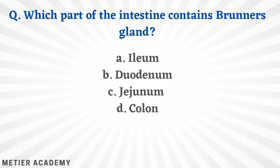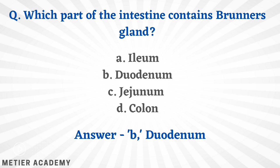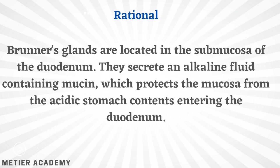Next question: which part of the intestine contains Brunner's glands? Options are ileum, duodenum, jejunum, and colon. The correct answer is option B, duodenum. Brunner's glands are located in the submucosa of the duodenum; they secrete an alkaline fluid containing mucin, which protects the mucosa from acid stomach content entering the duodenum.